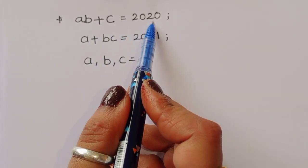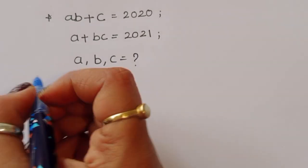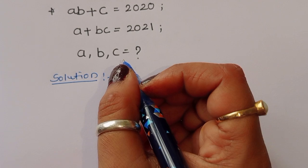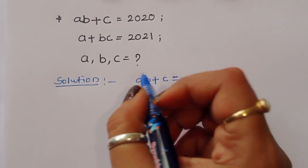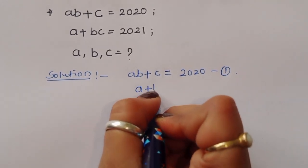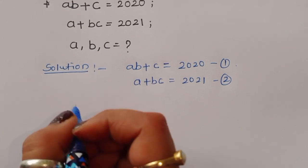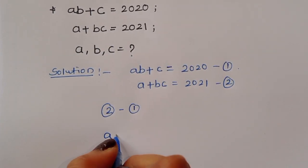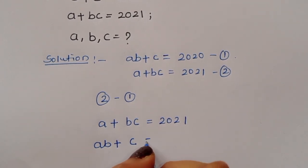The question is: given a·b + c = 2020 and a + b·c = 2021, we have to find the value of a, b, and c. This is a very interesting question. Equation 1 is a·b + c = 2020, and equation 2 is a + b·c = 2021.